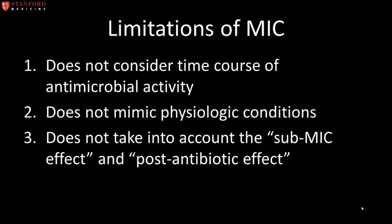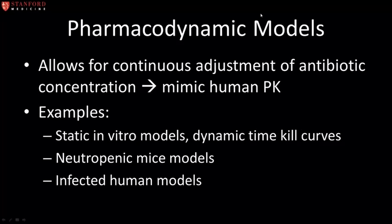Also of importance are effects of the antibiotic concentration below the MIC, known as the sub-MIC effect, as well as the post-antibiotic effect, which is the persistent inhibition of bacterial replication after removal of the antibiotic from the system. This potential deficit can be overcome by the use of in vitro or in vivo pharmacodynamic models. In vitro pharmacodynamic modeling systems allow continuous adjustment of antibiotic concentration over time to mimic human pharmacokinetics, and may also be determined using animal models such as rodent thigh models, with endpoints including measurements of colony-forming units at the site of infection.